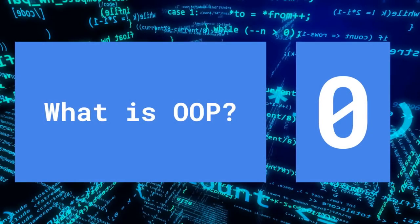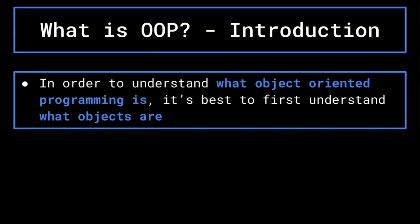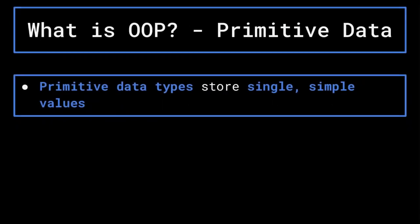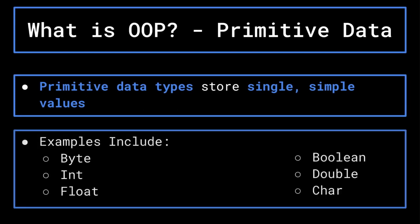In this first section, we will be going over what object oriented programming actually is. In order to understand that, it's best to first understand what objects are, and in order to do that, it's best to first understand what primitive data types are. Primitive data types are exactly what they sound like: variables that store single simple values. Examples of such primitive types are the byte, int, float, double, Boolean, and char.